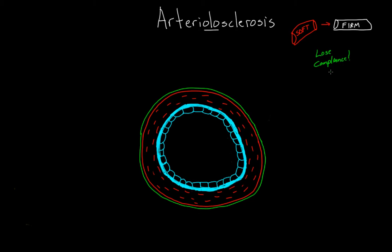We also know where it's happening because we have a clue in the name — the 'OLO' tells us this is different than arteriosclerosis, and that this process is happening in the small arteries and arterioles. Just to get a sense of size, this is usually around 0.01 millimeters to about 1 millimeter, so pretty tiny and really hard to see with your eyes. I've drawn an example of what a cut vessel might look like under a microscope.